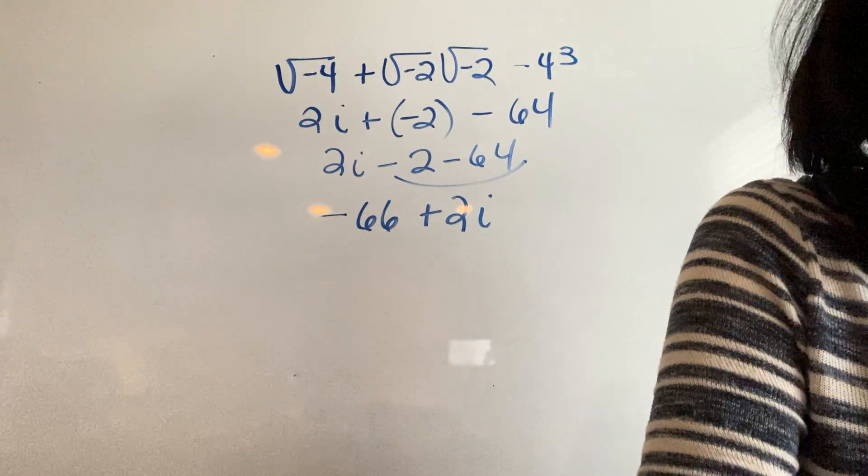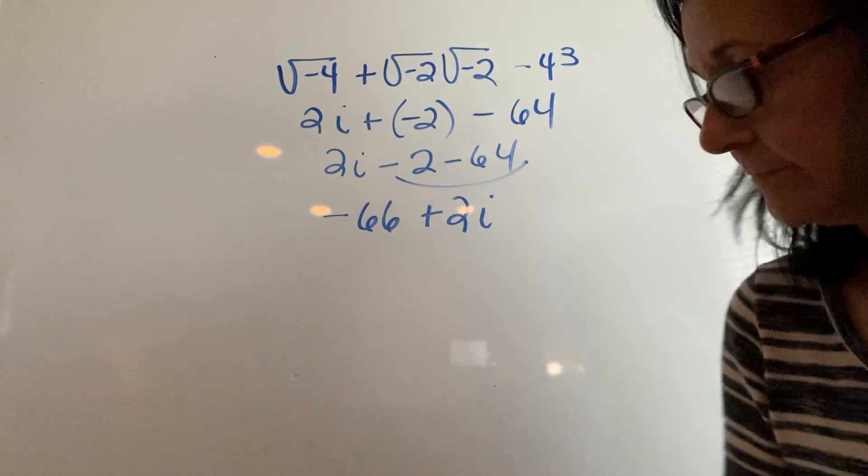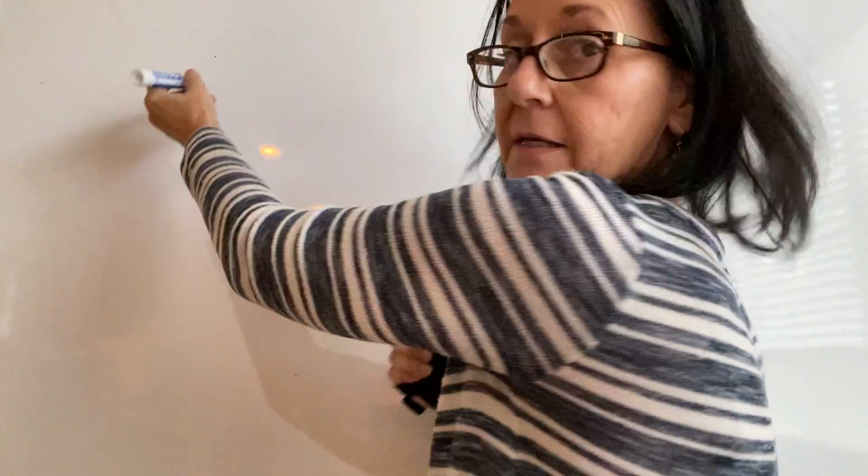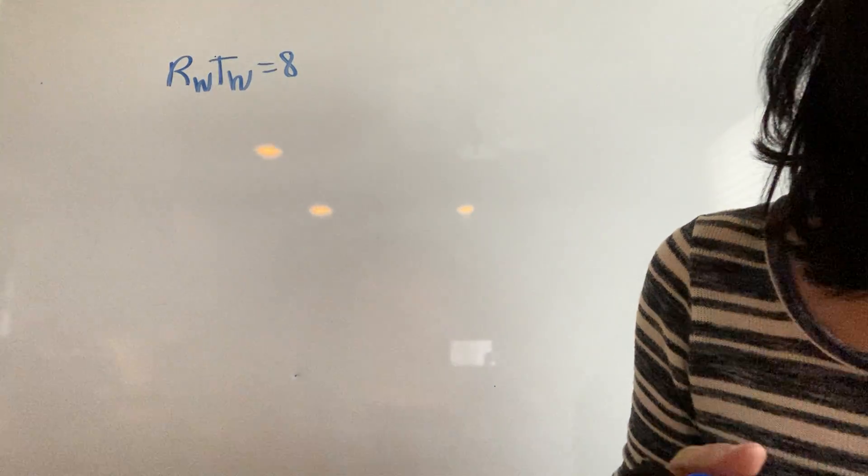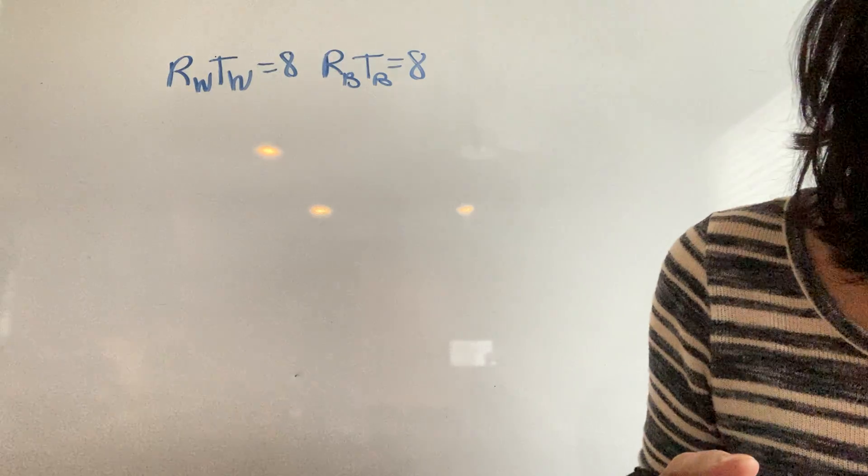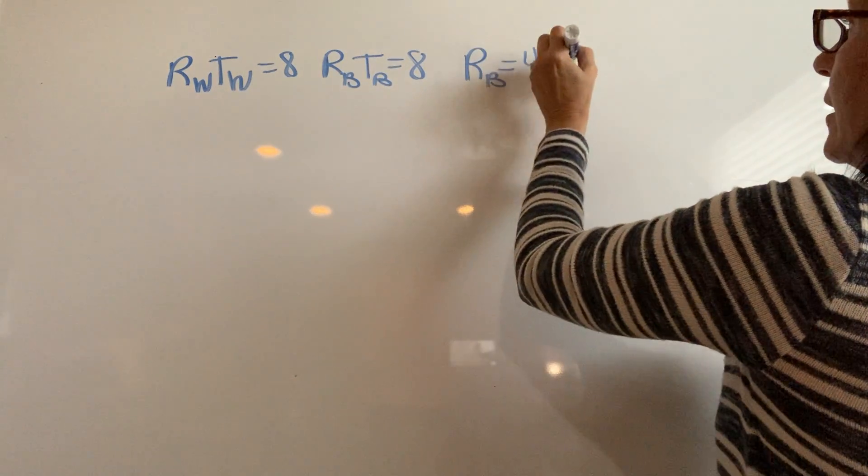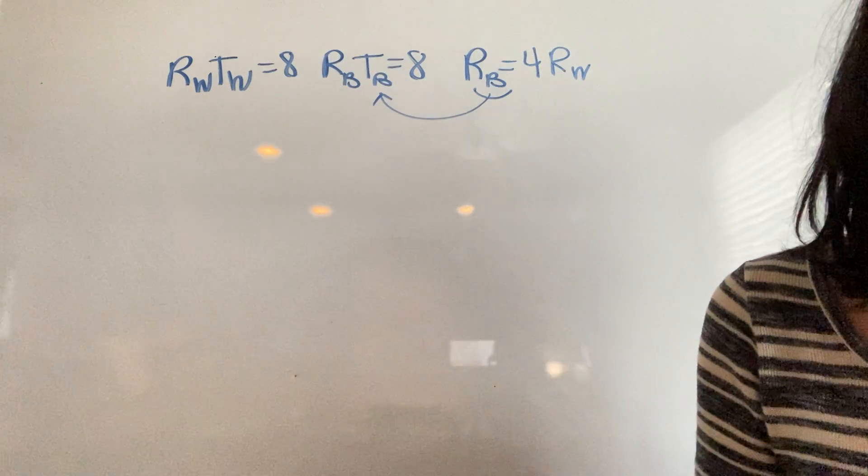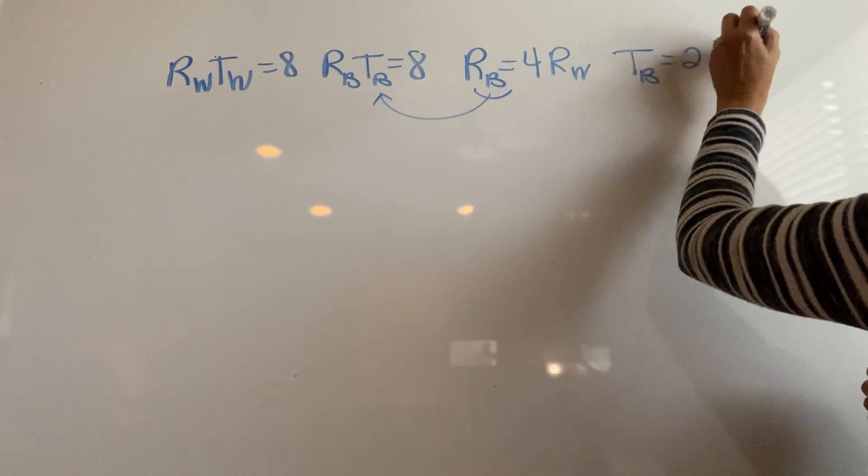Now let's move on to lesson 65, number 6, on page 277. It's the advanced substitution. RWTW equals 8, RBTB equals 8, RB equals 4RW, TB equals 2 minus TW. So I'm thinking I'm substituting these two values and for RBTB into this equation.